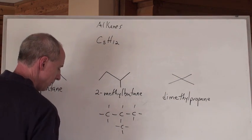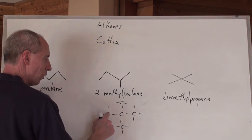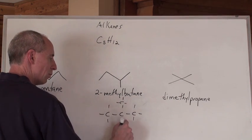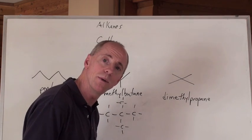You would take that one off there and maybe put it up top here. And now you've got one, two, three is the longest continuous chain with a methyl branch here and a methyl branch here. So that's two methyls. That's a dimethyl on a propane. That's dimethylpropane.